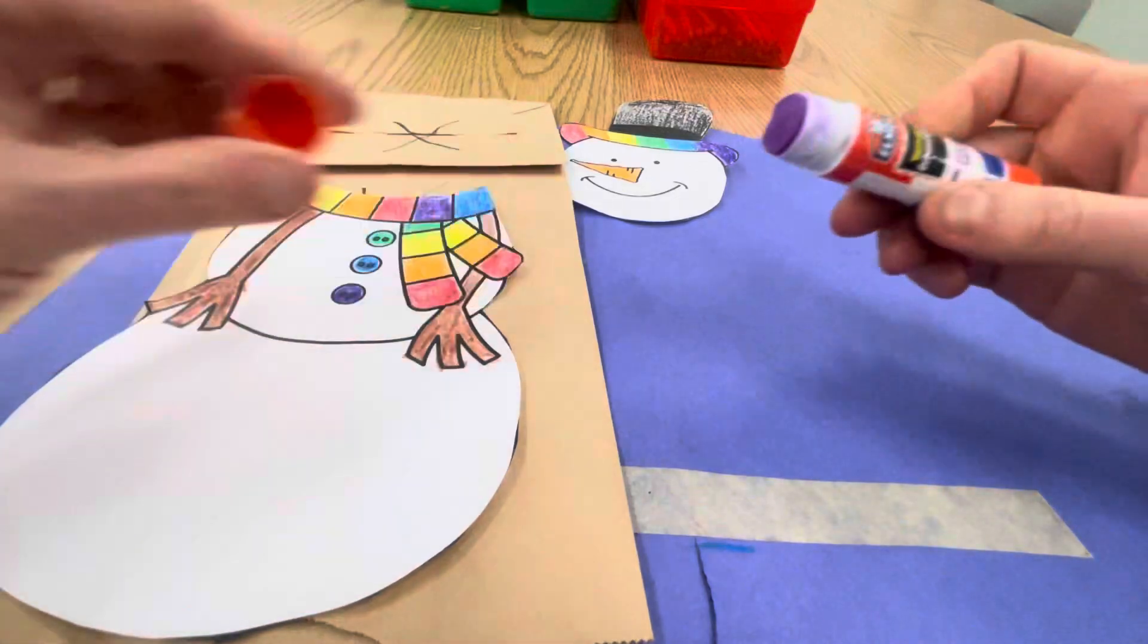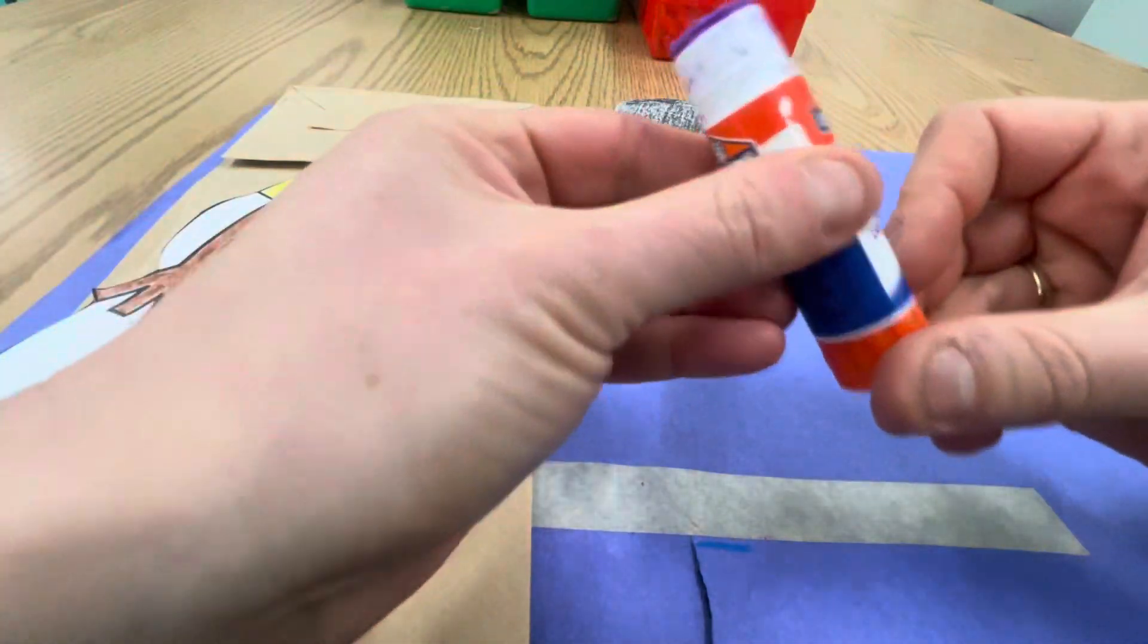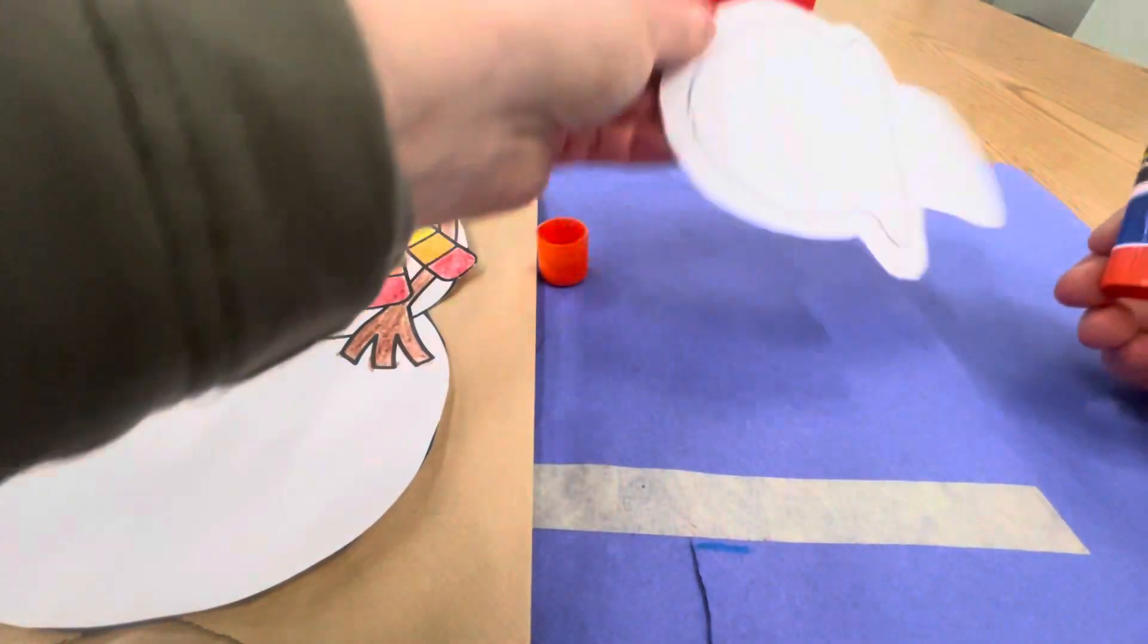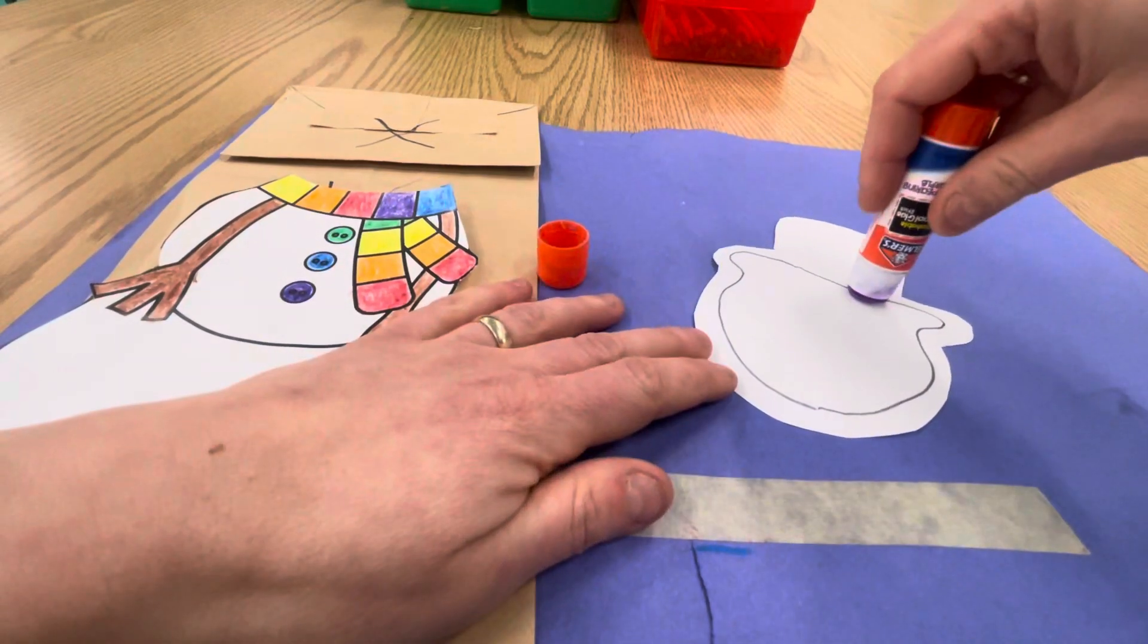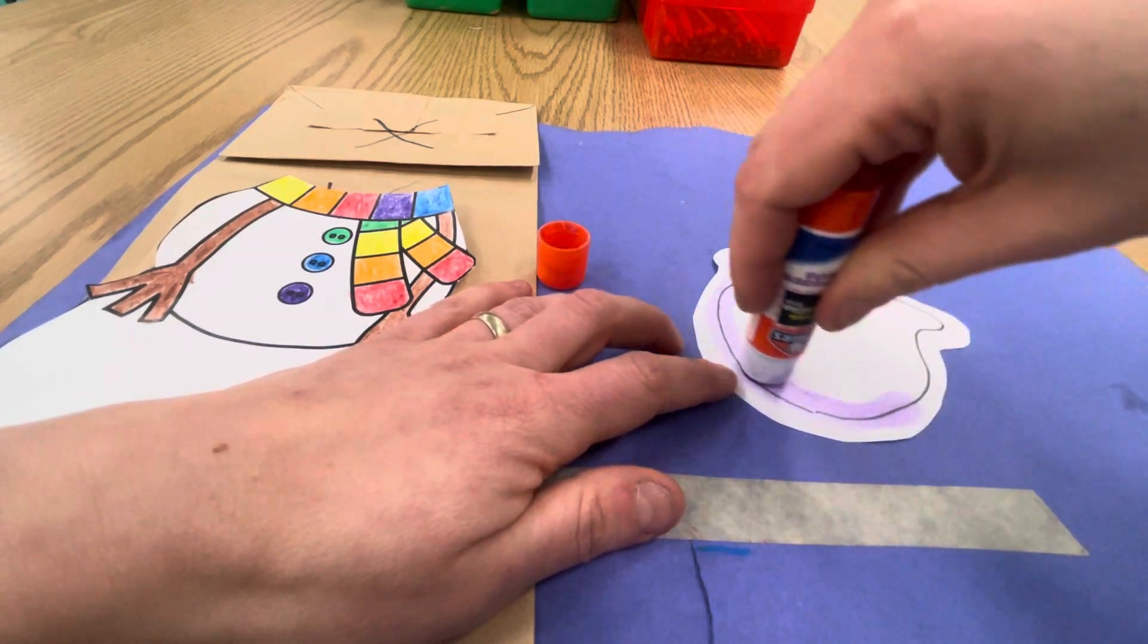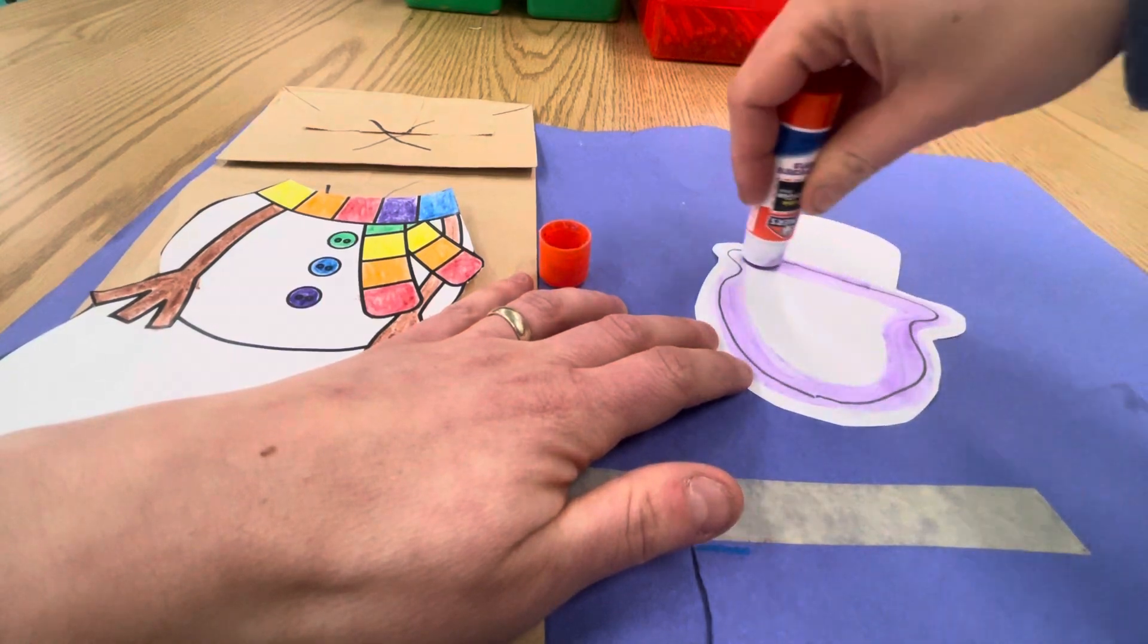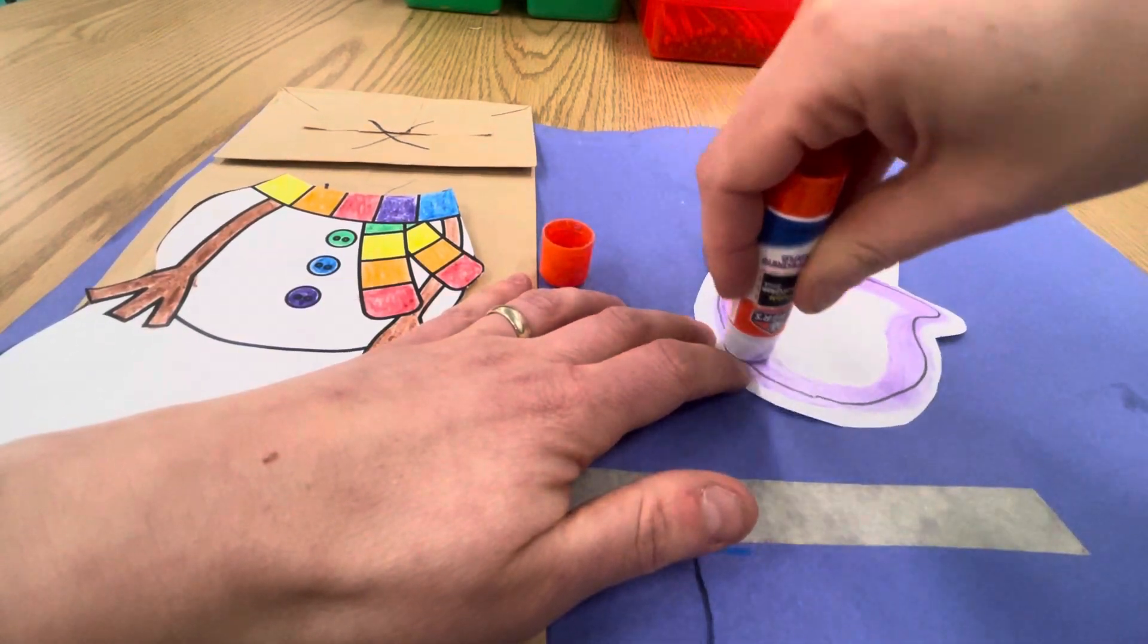Okay, so take the cap off your glue. Remember that we keep it close by so it doesn't roll away and we only roll it up just a little bit. If you turn the head over you'll see a line that you can follow with your glue stick so that you can get pretty close to the edge and we don't really need it up there on the hat.